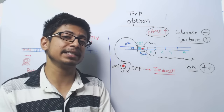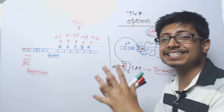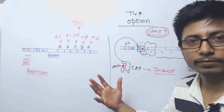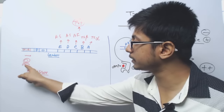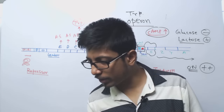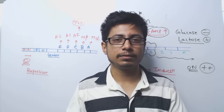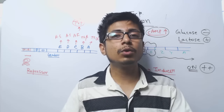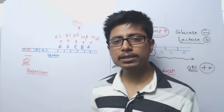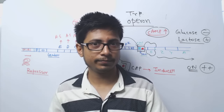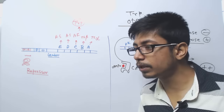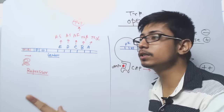The lac operon is turned on once lactose is present in the environment. On the other hand, the tryptophan operon is turned on by default because tryptophan is an essential amino acid and the cell needs to keep producing it. The repressor is present but is structured such that it will not be able to bind. The regulation logic is simple: when there is no tryptophan the operon is ON; when there is high concentration of tryptophan the operon is turned OFF.